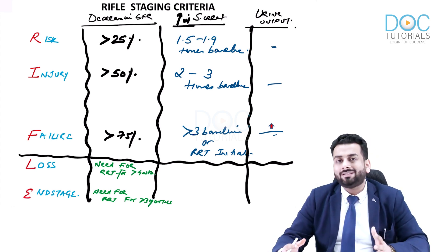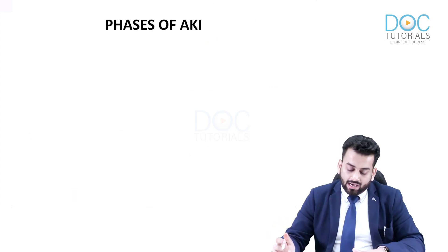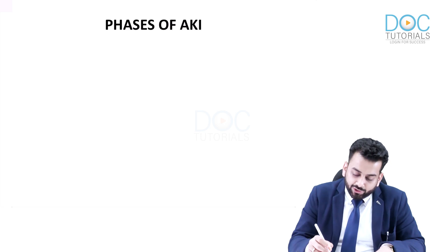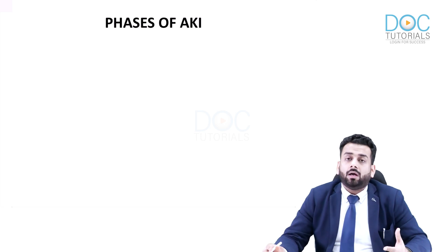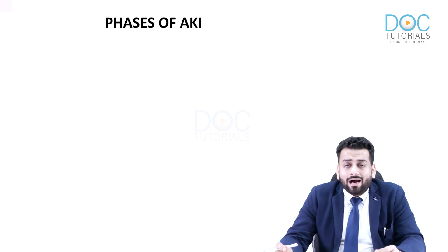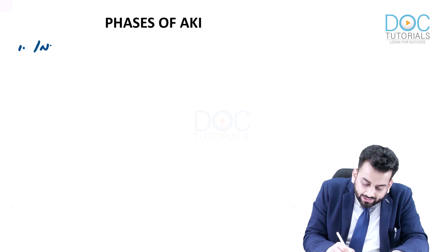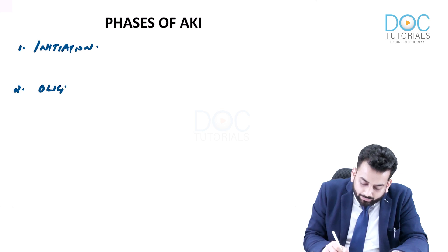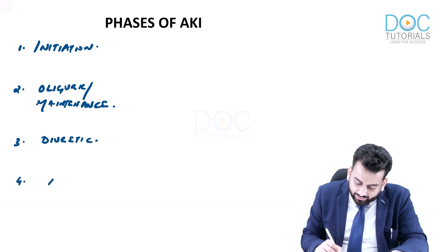After discussing the staging systems — KDIGO, AKIN, and RIFLE — we must discuss the four phases of AKI: the initiation phase, the oliguric or maintenance phase, the diuretic phase, and the recovery phase.